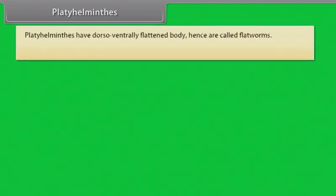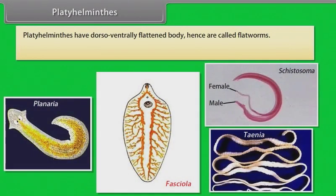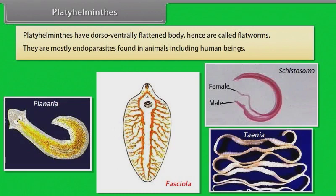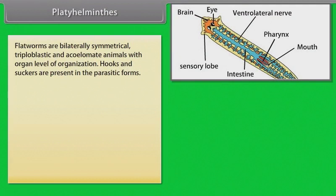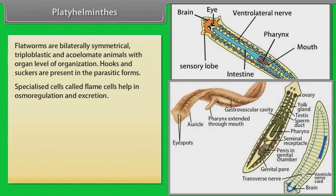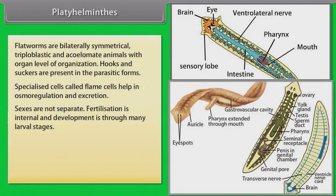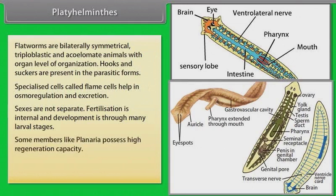Platyhelminthes have a dorsoventrally flattened body, hence are called flatworms. They are mostly endoparasites found in animals including human beings. Flatworms are bilaterally symmetrical, triploblastic and acoelomate animals with organ level of organization. Hooks and suckers are present in the parasitic forms. Specialized cells called flame cells help in osmoregulation and excretion. Sexes are not separate; fertilization is internal and development is through many larval stages. Some members like Planaria possess high regeneration capacity.